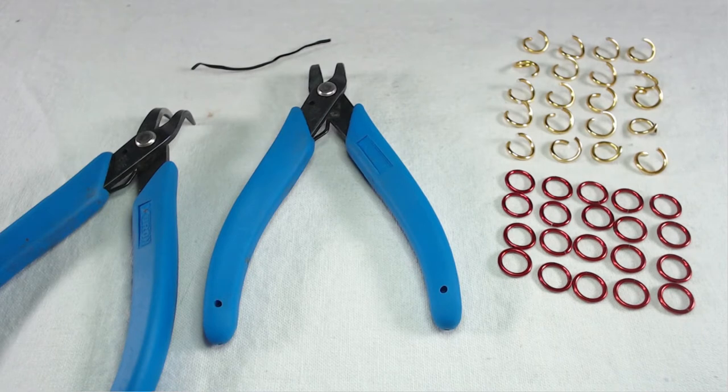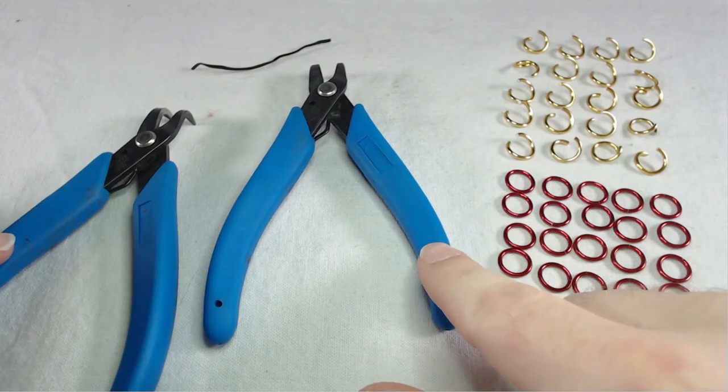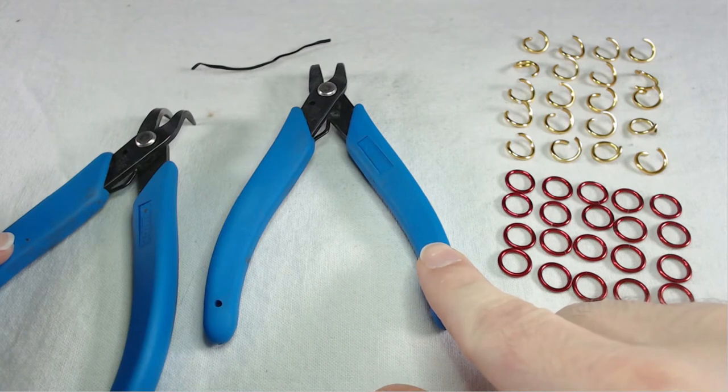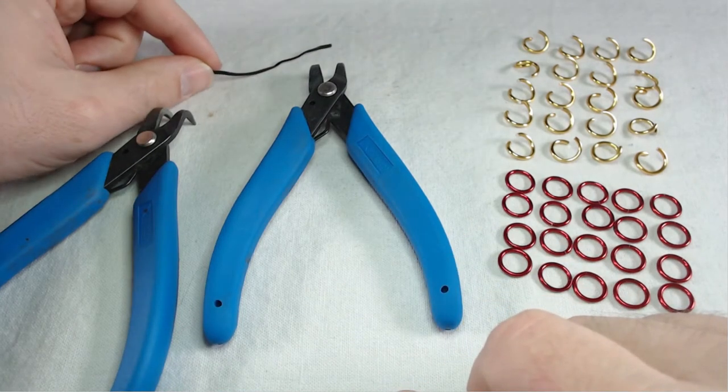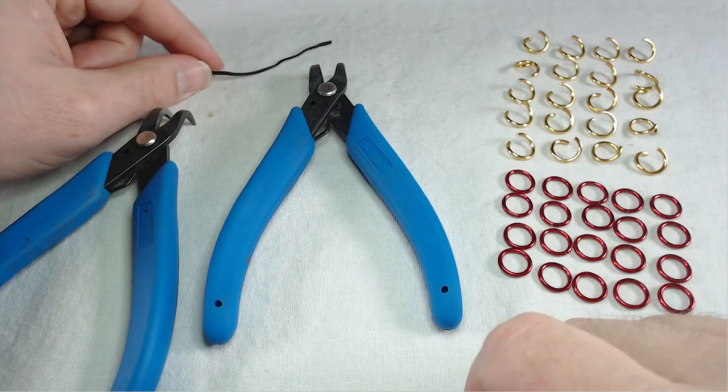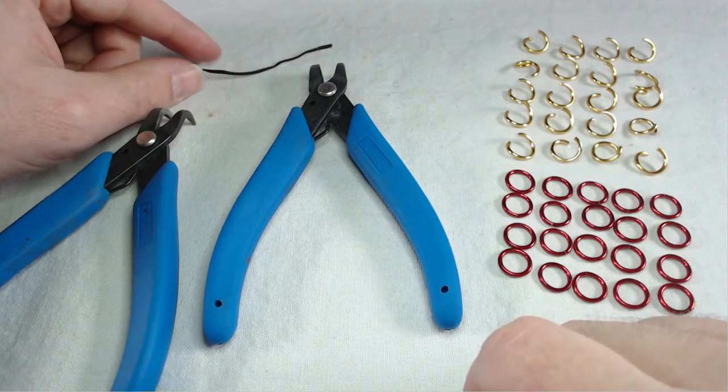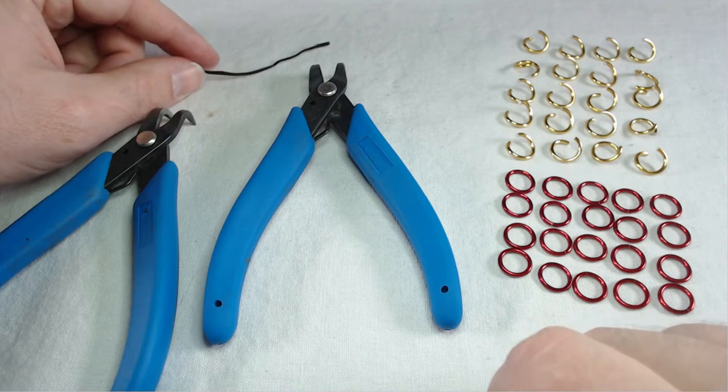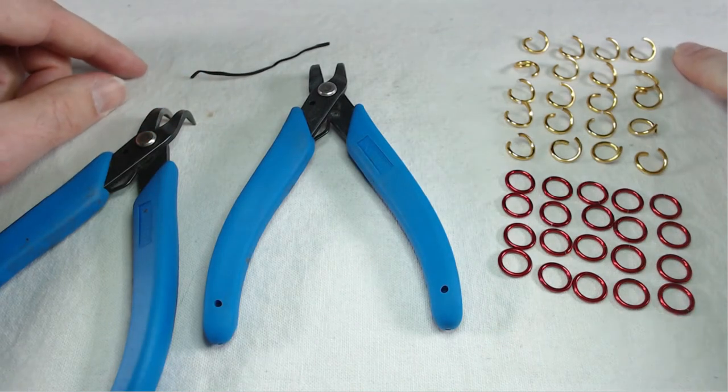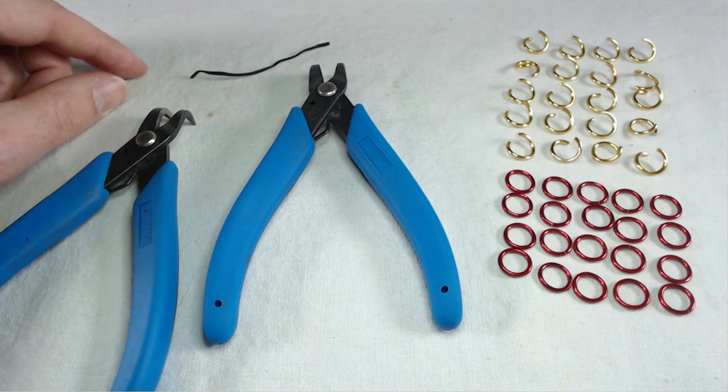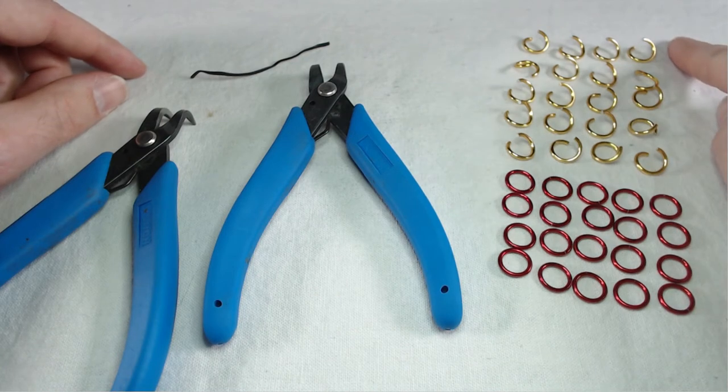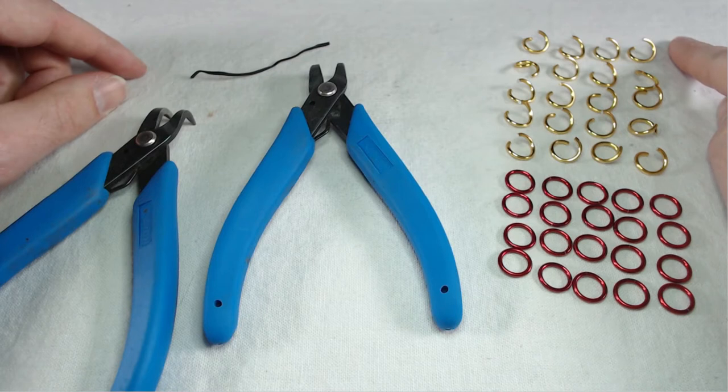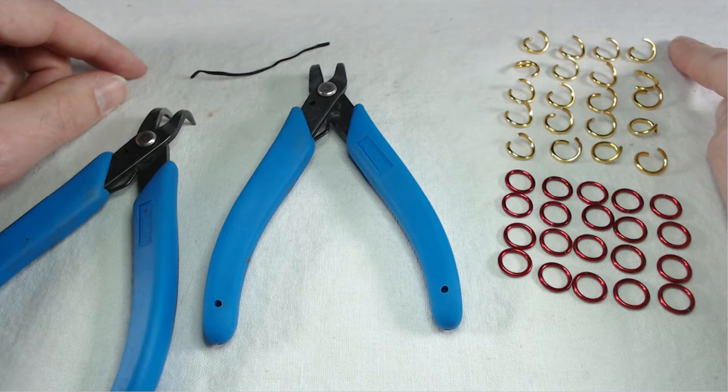Let's take a look at what we need. We need two sets of pliers. I'm currently using Xuron bent nose pliers. You can use a bread tie if you'd like to identify one end of your weave that you're working on. It's not necessary, but some people find it helpful. Then you have 40 rings that we're going to be working with here. You can have as many rings as you want or as few. All depends on what you're trying to accomplish during this tutorial.